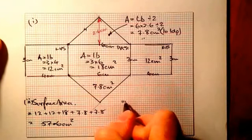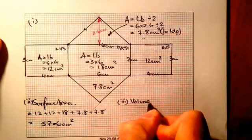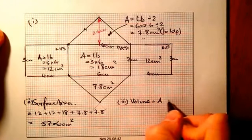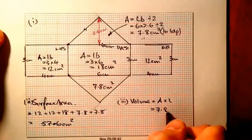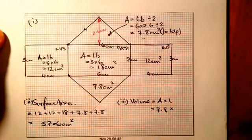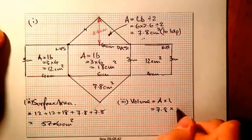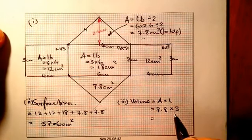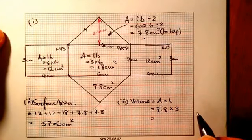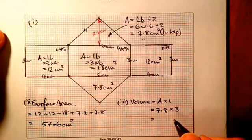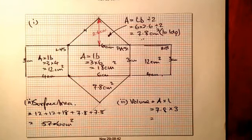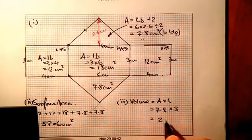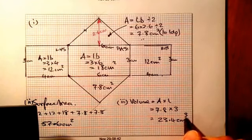Finally, the volume. The volume equals the area of the triangle times the length. The area of the triangle is 7.8, and we multiply that by the length which is three. That gives me 23.4 centimetres cubed.